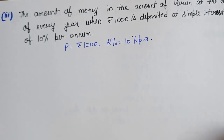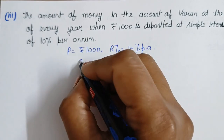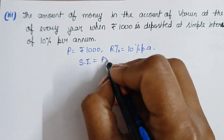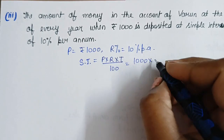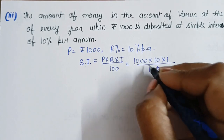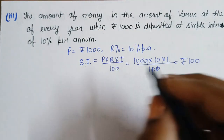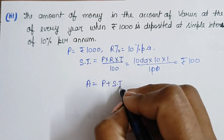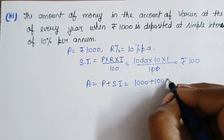We need to check whether the amount forms an AP or not. Using the formula SI = P × R × T / 100, with P = 1000 and R = 10, for T = 1 the interest is Rs. 100. So at the end of the first year, the amount is 1000 + 100 = Rs. 1100.